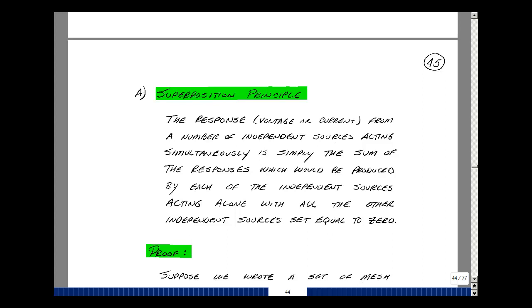What this means is that if I want to solve for a voltage or a current, I can find that voltage or current due to each source with all the other sources set equal to zero. And I want to do that one source at a time, and I'm going to add up all the results. Now, why would something like that be true?